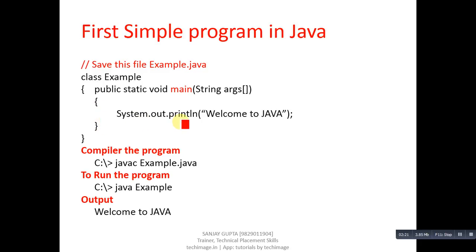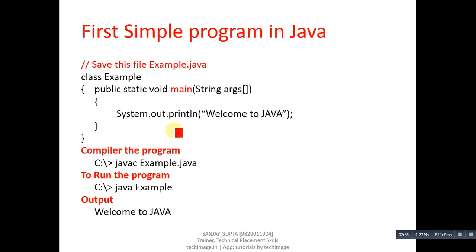Inside main's curly braces, the statement System.out.println is written for printing. Here, System is the name of the class, out is the object, and println is the method through which we print text on the console. The 'ln' means new line, so 'Welcome to Java' will be printed on a new line on the console. This is the source code written in Java.